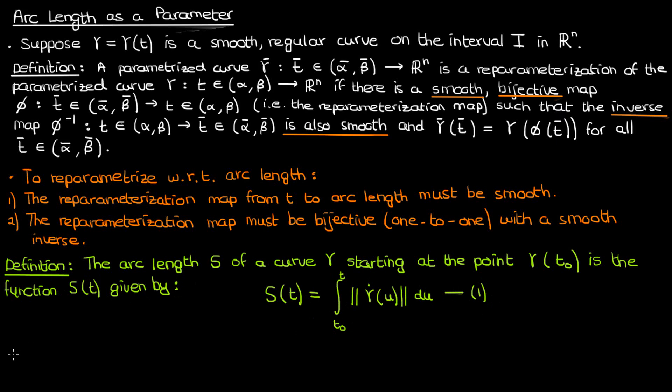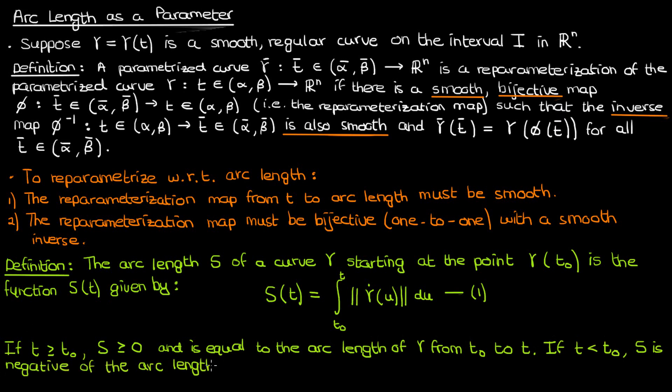It should be fairly easy to tell from equation 1 that if t is greater than or equal to the starting point t₀, then s is greater than or equal to 0 and is essentially equal to the arc length of γ between t₀ and t. On the other hand, if t is less than t₀, then s is the negative of the arc length of γ between t₀ and t.